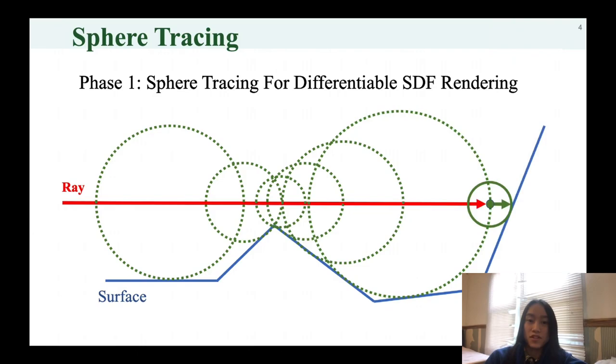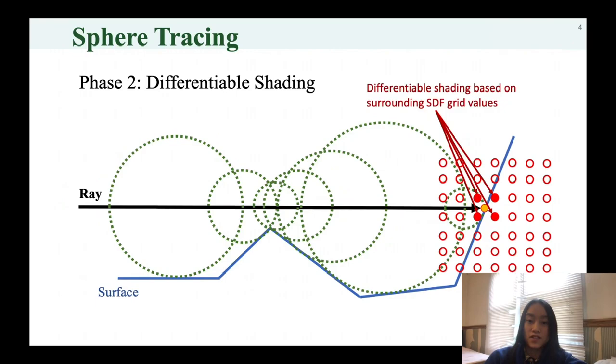Then we locally compute the pixel colors based on the local set of SDF samples. The sphere-tracing step does not need to be differentiable, so the computation cost of this step is negligible in our approach. Only the last shading step uses an automatic differentiation framework to obtain the derivatives.